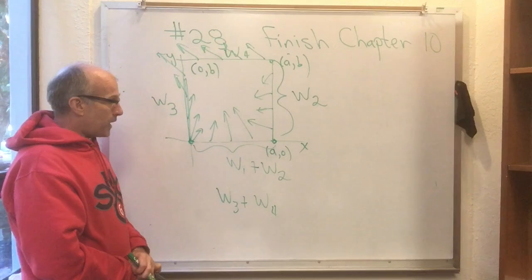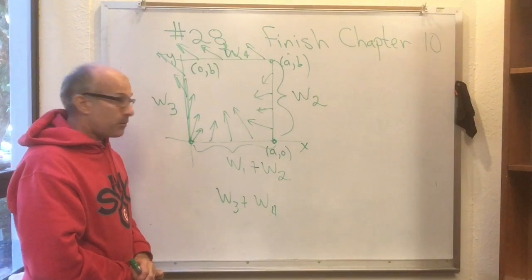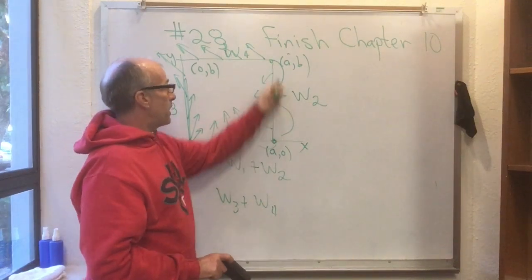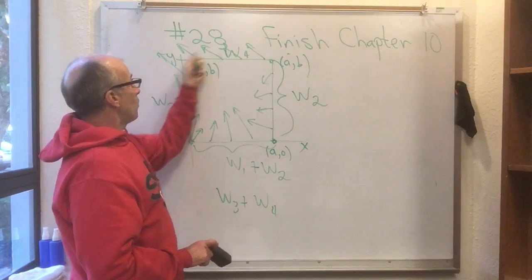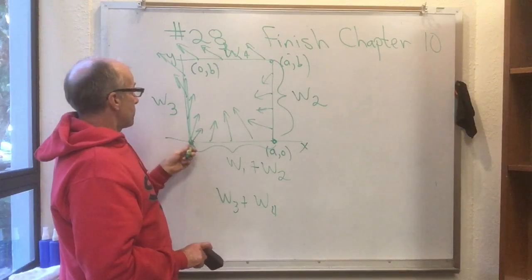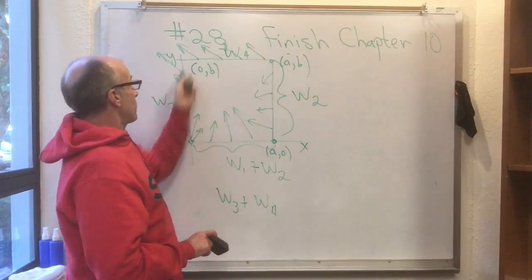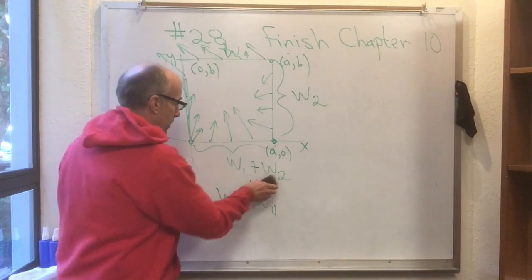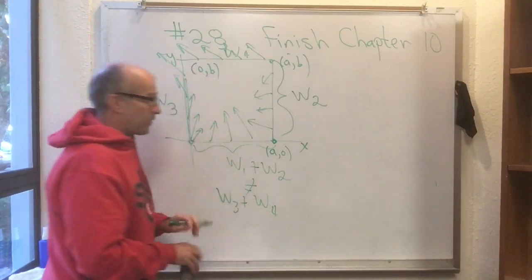And the fact is it's only dumb luck it would seem if the total work getting from 0, 0 to A, B going this way would be equal to the total work going from 0, 0 to A, B going this way. In other words this might equal that or it might not equal that.